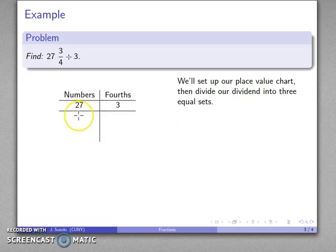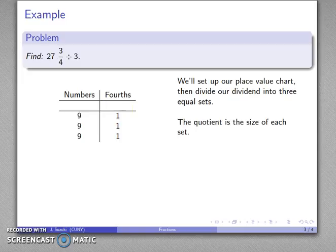From this 27, I can form three sets of nine, and from this three I can form three sets of one. My quotient is going to be the size of each of these sets.